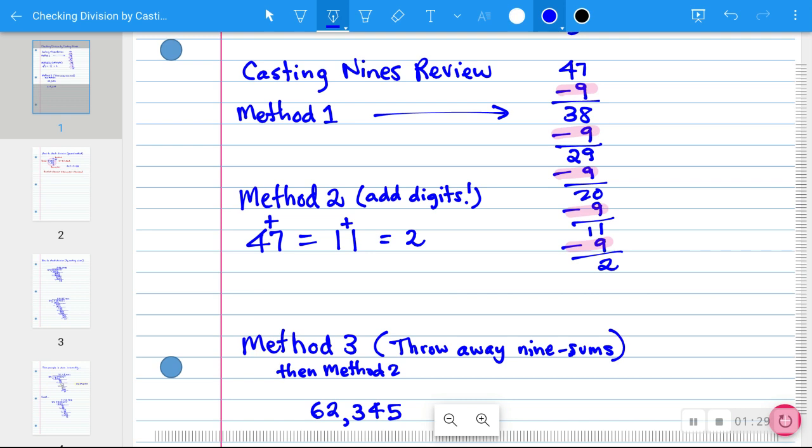Your answer when you cast 9 should be one of the following digits: 0, 1, 2, 3, 4, 5, 6, 7, or 8. The biggest value you should get when you cast 9 is 8. In this case, 47 gives 2.